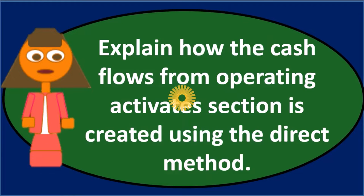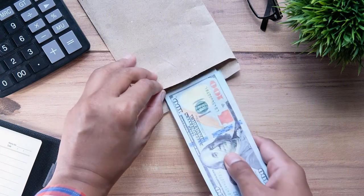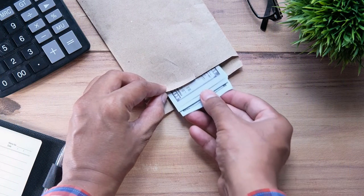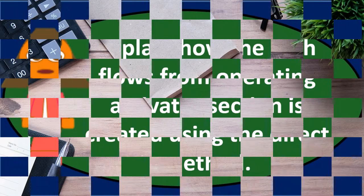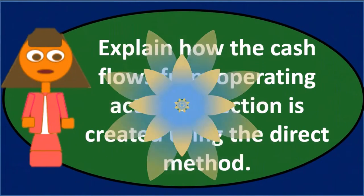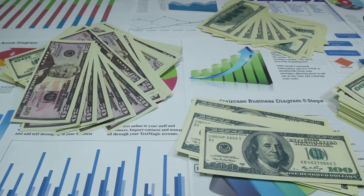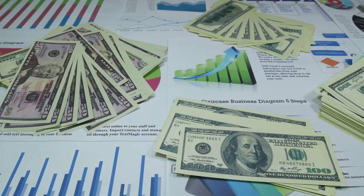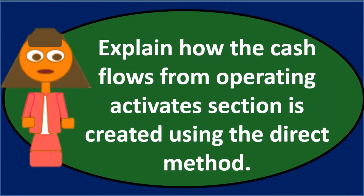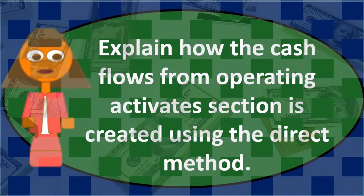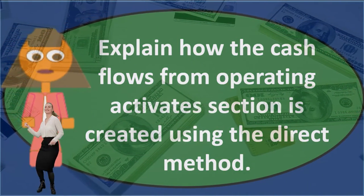The indirect method starts with net income and reconciles down to cash flows from operating activities. It's like starting at net income and reversing out everything to arrive at net income on a cash basis — cash from operating activities. That reconciliation is valuable because it shows the difference between net income and operating cash flows, which is one reason the indirect method is sometimes required even when the direct method is used.